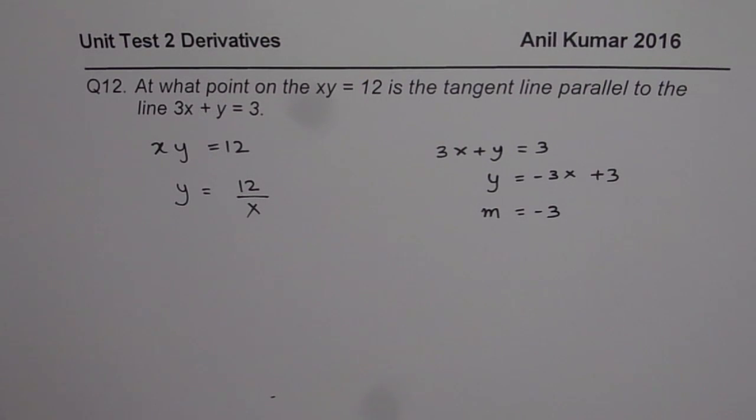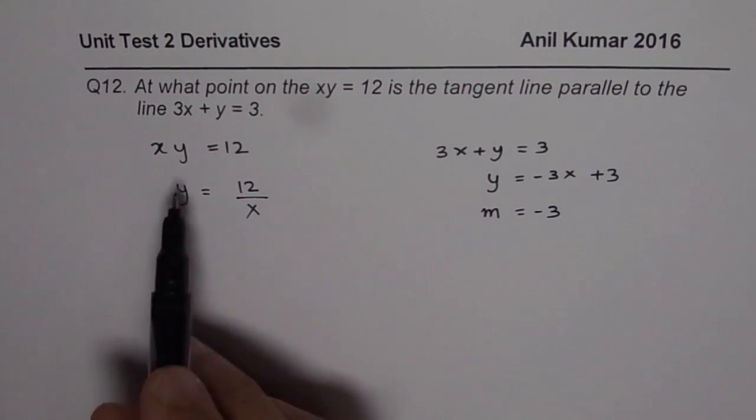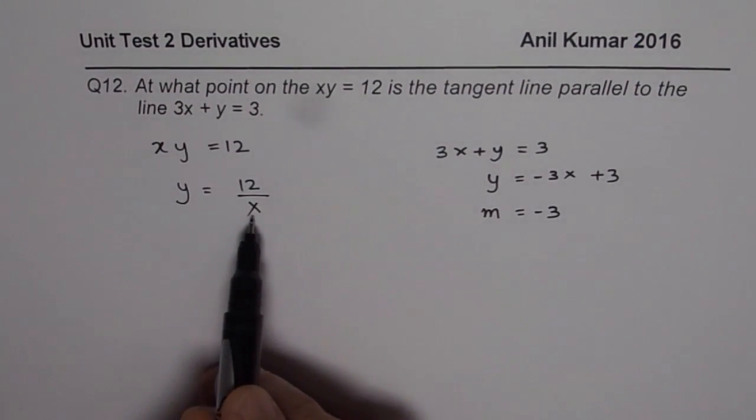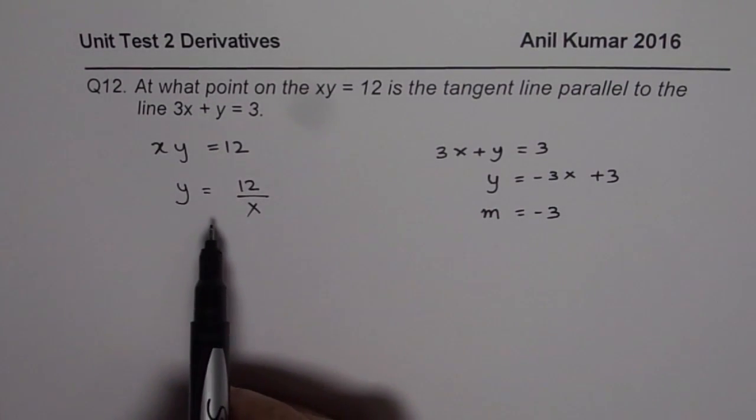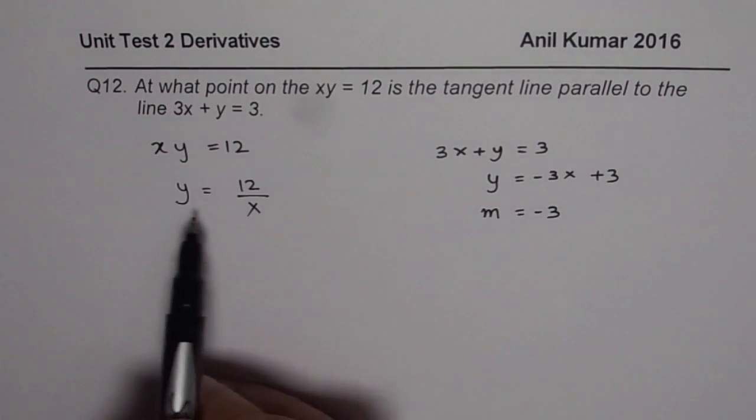That is power rule, product rule, quotient rule, chain rule. And explicitly write y in terms of the other variable. Soon you will learn the other rules where you could do implicit derivatives. Then it will be simpler for you. Anyway, this is not difficult also. So now you get the concept.